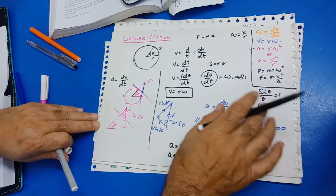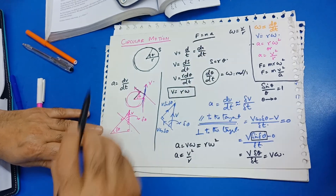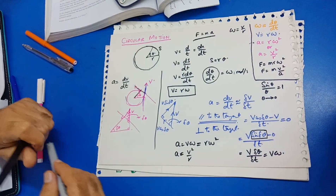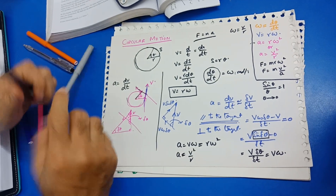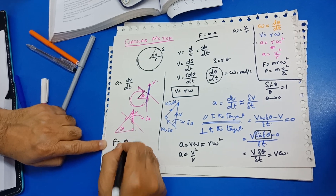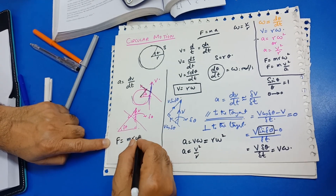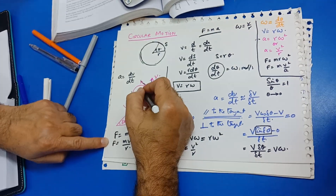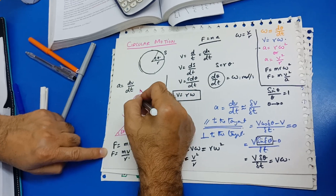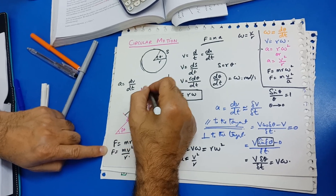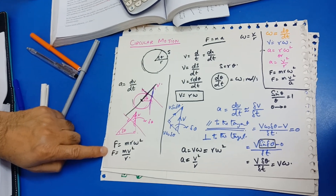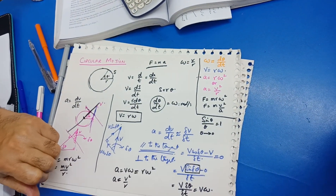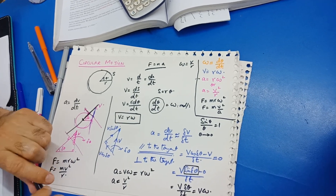Now applying F = ma for circular motion: the resultant centripetal force is either F = mrω² or F = mv²/r. This force acts directed toward the center, passing through the center of the circular path. I've now fully explained the formulas for this first part of circular motion. In my next video, I'll be solving questions from the first exercise, so stay tuned. Thank you.